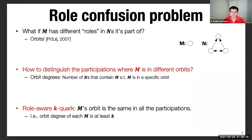We want to distinguish the participations where M is serving in different orbits. In order to do that, we define this orbit degrees, the number of large motifs that contain a small motif, where the small motif is in a specific orbit. We adapt our k quark definition accordingly. The role-aware k quark is just like the k quark. The only difference is M's orbit is the same in all of its participations. In other words, orbit degree of each M is at least k.